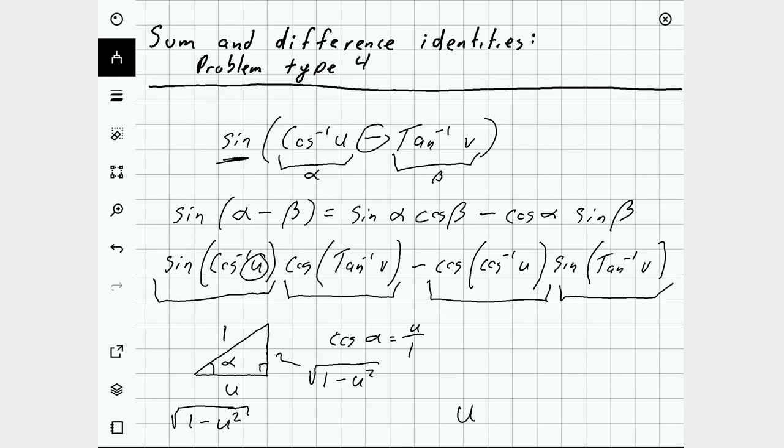Then we can look at tangent. If I draw another right triangle, let's call this angle in here beta. And remember that tangent of beta is v, which is v over 1. And tangent is written as opposite over adjacent.